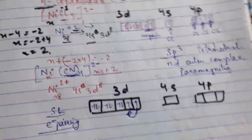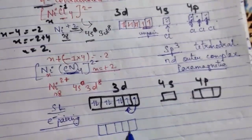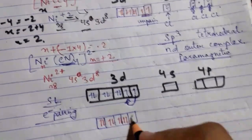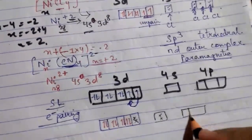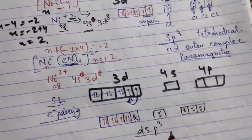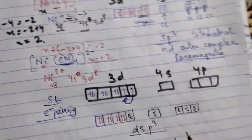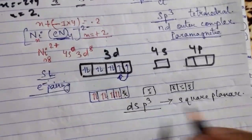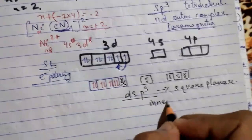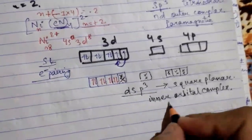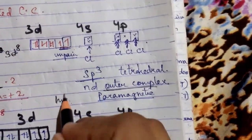After pairing: 1, 2, 3, 4 — electrons pair up in 3d. Using 4s and 4p orbitals: the hybridization is 1d, 1s, 2p — that is dsp² hybridization. The geometry is square planar. This is an inner orbital complex. Inner orbital complex means low spin, and outer orbital means high spin.